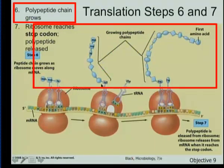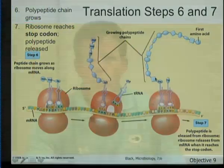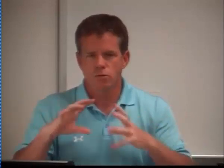We continue down the messenger RNA strand, and the amino acid sequence - the primary structure of that protein - keeps growing and growing. Once we've reached the stop codon, we've formed that full polypeptide. Due to hydrogen bonding, it starts to get a three-dimensional structure - secondary structure. Due to interactions of side chains, it folds even more three-dimensionally - tertiary structure. And if it interacts with another polypeptide, we have quaternary structure.